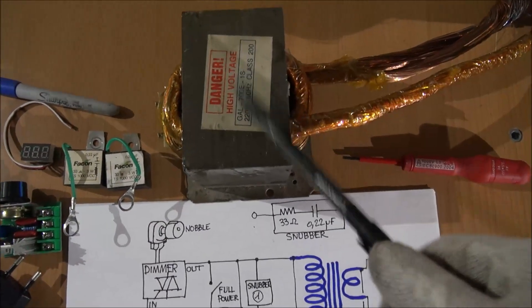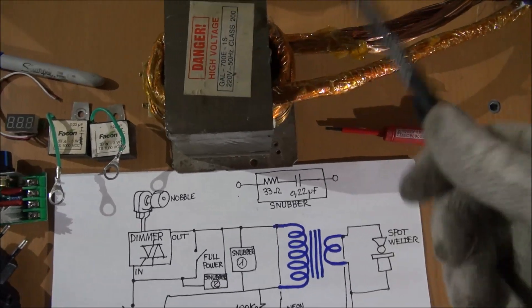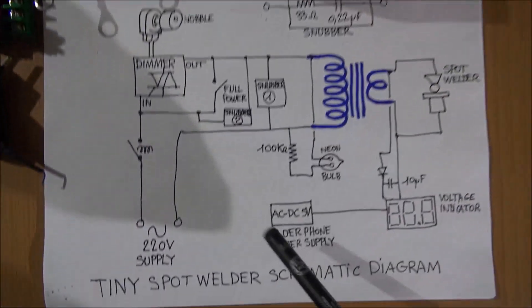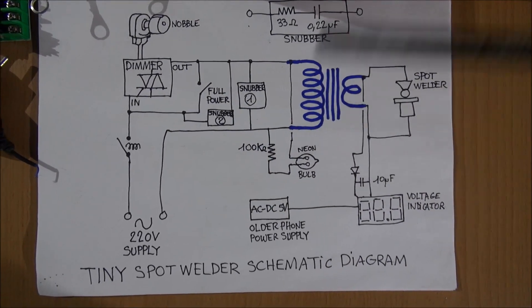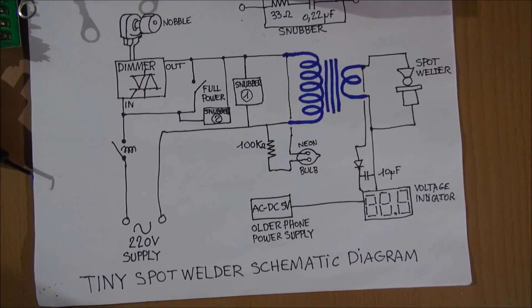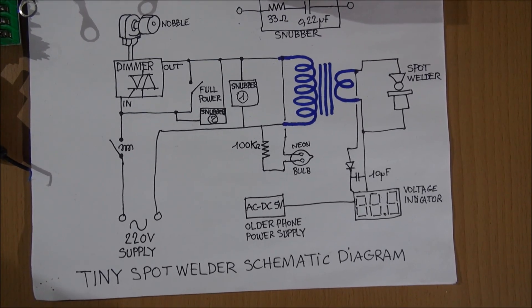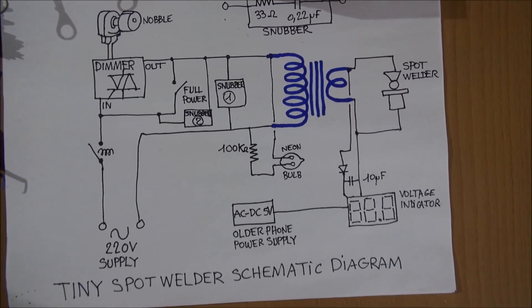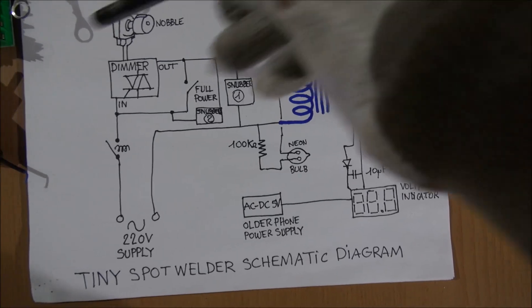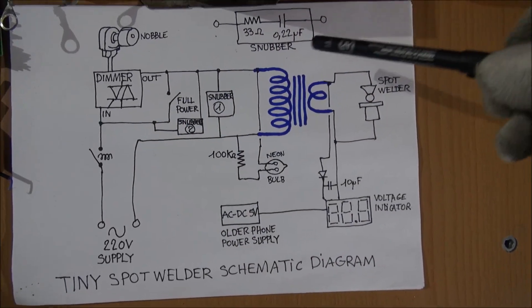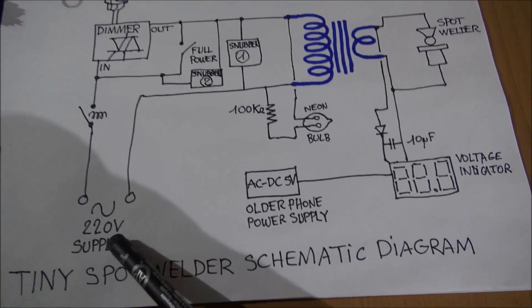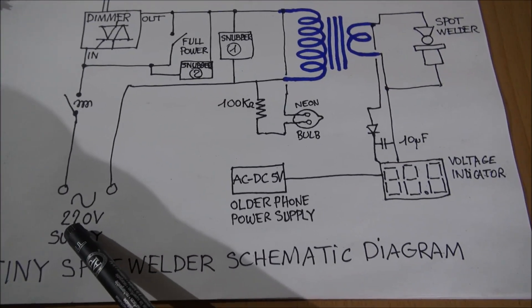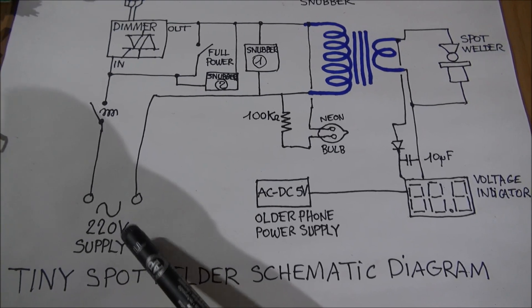This is not the spot welder itself, but just a transformer for the case. So you have the diagram if you want to realize and build your own variable power spot welder. This is the schematic you need to understand. You need the 220 volt supply.